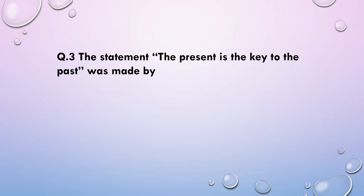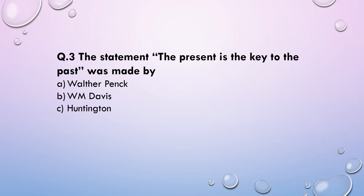Next question: The statement 'the present is the key to the past' was made by — (a) Walther Penck, (b) W.M. Davis (William Morris Davis), (c) Huntington, or (d) James Hutton. The answer will be James Hutton.